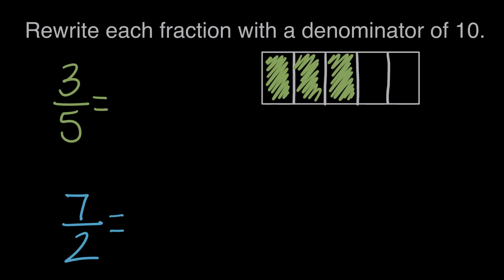But we've decided we don't want fifths anymore. Now we want tenths. We want a new denominator of 10. So to change this fraction, to change this to be tenths, we need to split each of these fifths in half. We need to double the amount of pieces.